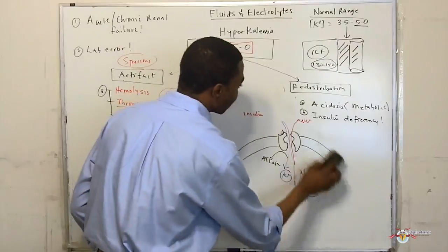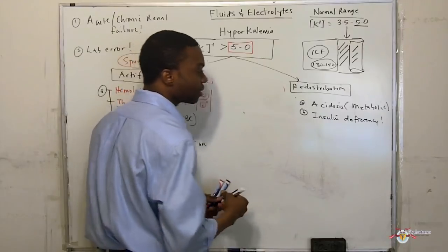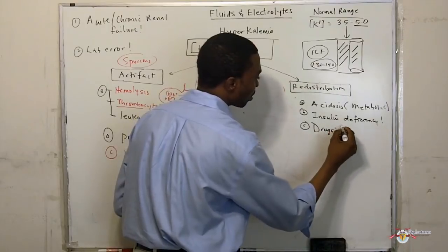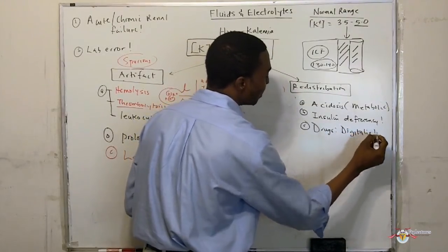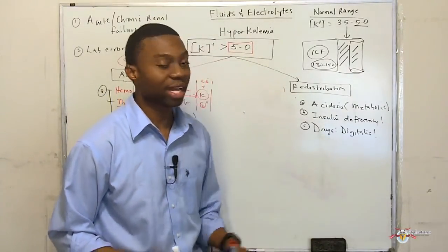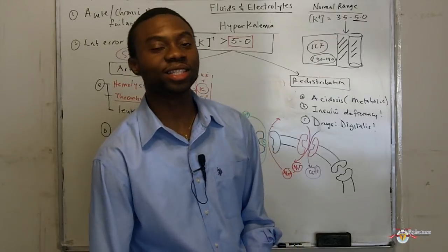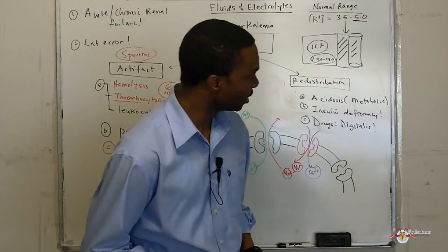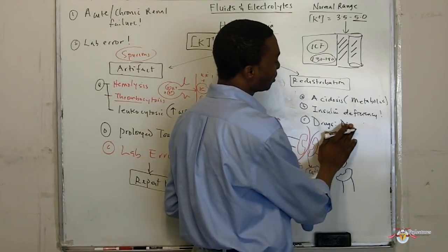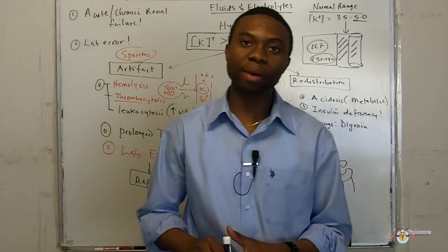What does D stand for in our mnemonic AIDS? D is for drugs. What drugs are we talking about? Digitalis. Digitalis — or digoxin — is one of the drugs that can cause you to develop hyperkalemia. How does digoxin cause hyperkalemia? Let's check it out.